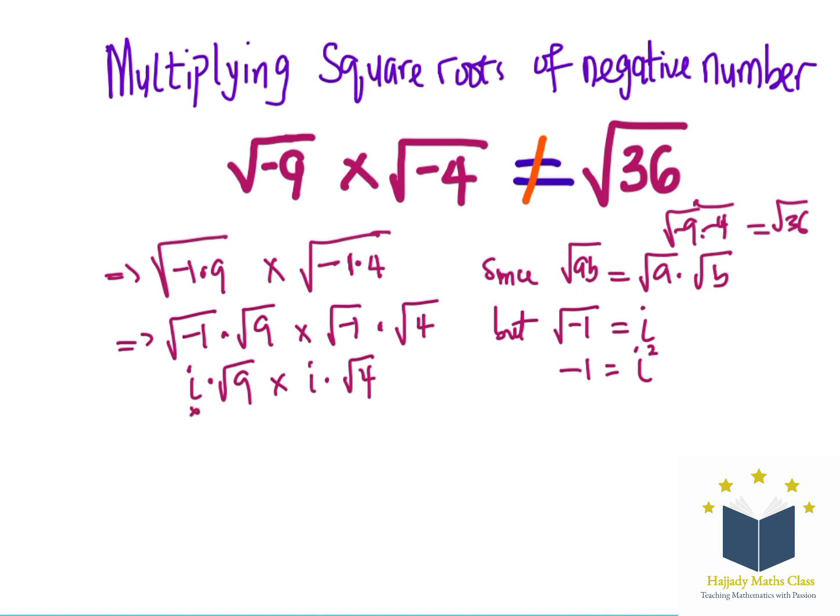Now, if my i multiplying another i, here, I'm going to have i squared equals root 9 times root 4.